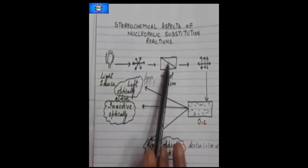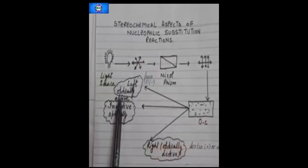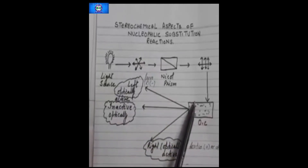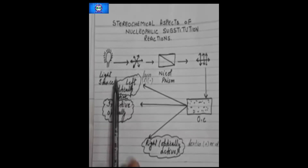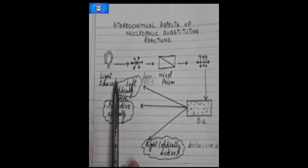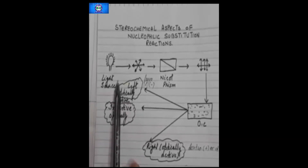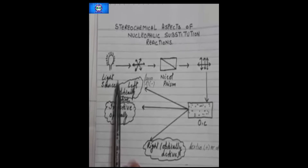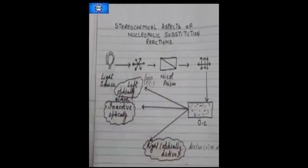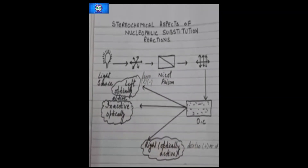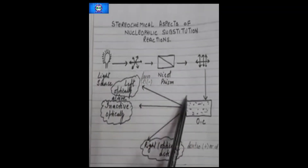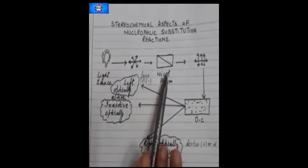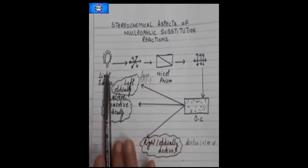The first one is plane polarized light. Ordinary light consists of electromagnetic waves of different wavelengths, and it consists of waves having oscillations or vibrations in all planes perpendicular to the line of propagation of light. If such a wave of light is passed through the Nicole prism —